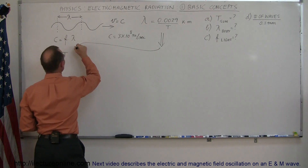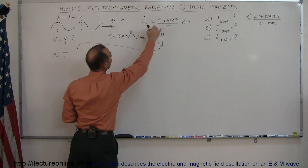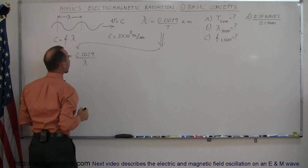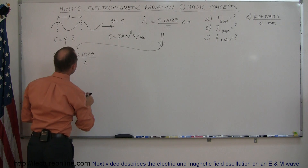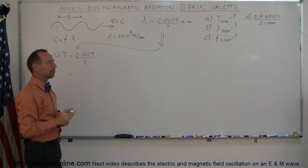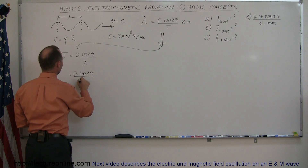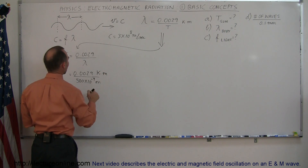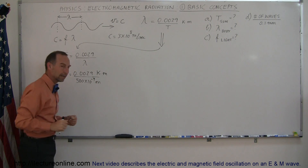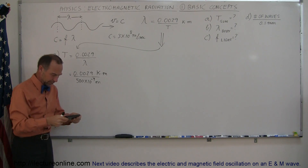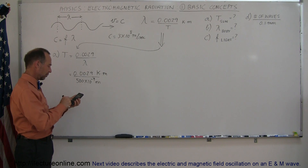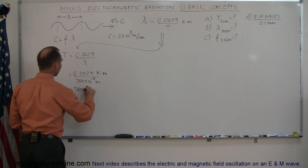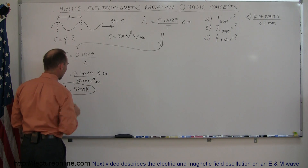Using Wien's Law, the temperature equals 0.0029 divided by lambda. Plugging in lambda as 500 nanometers, that's 0.0029 divided by 500 times 10 to the minus 9 meters, and the temperature of the Sun comes out to about 5,800 Kelvin. That's the surface of the Sun, of course — not the center, where all the nuclear fusion takes place.